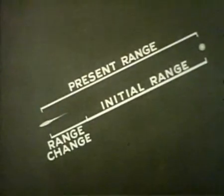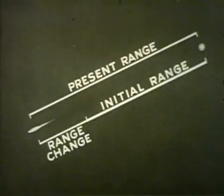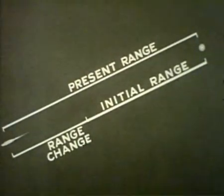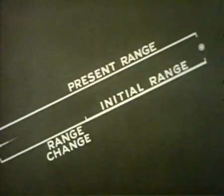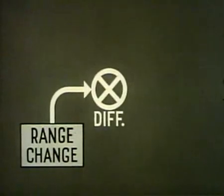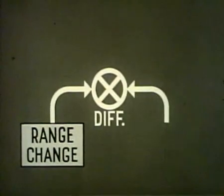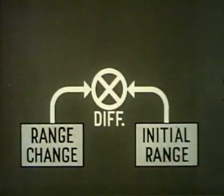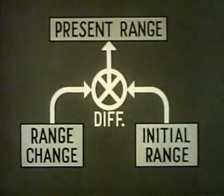The integrator computes range change smoothly and continuously with the changing range. This example, with range changing at a constant rate, was used here because of its simplicity. Actually, in almost all situations, range change is not constant. Nevertheless, the integrator continuously computes range change and delivers it as an input to a differential. The other input is initial range, and the differential delivers the algebraic sum as present range.